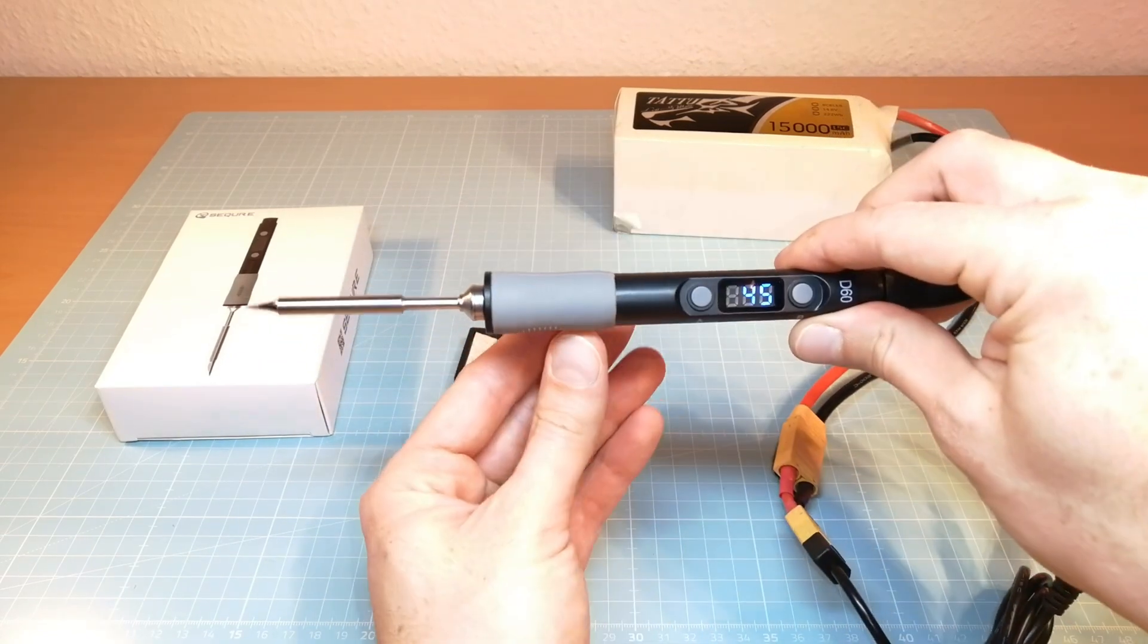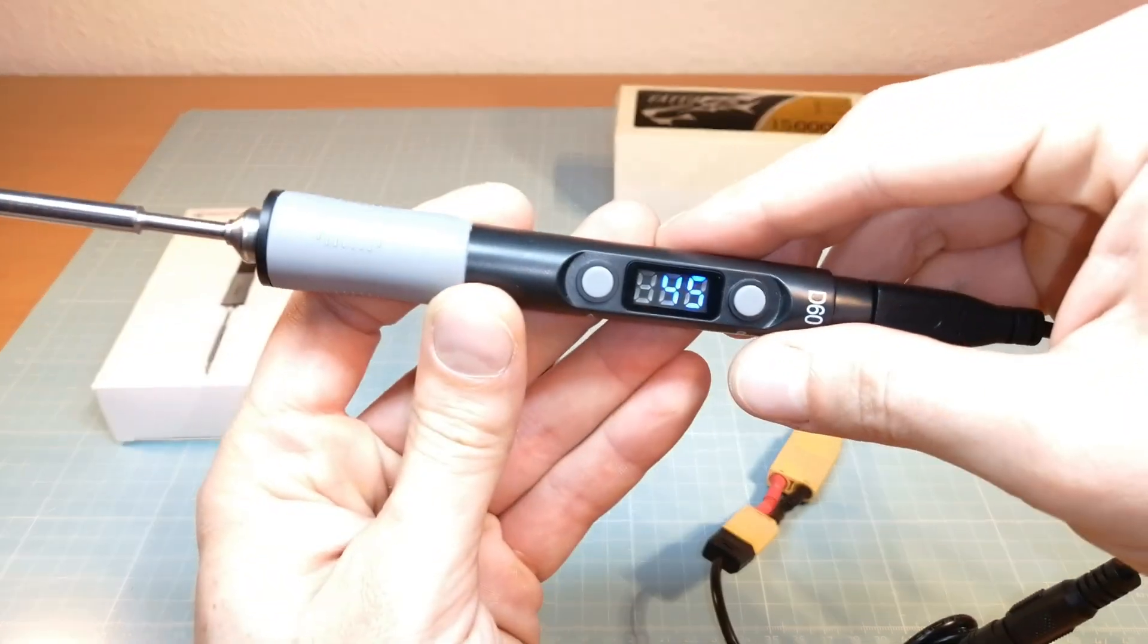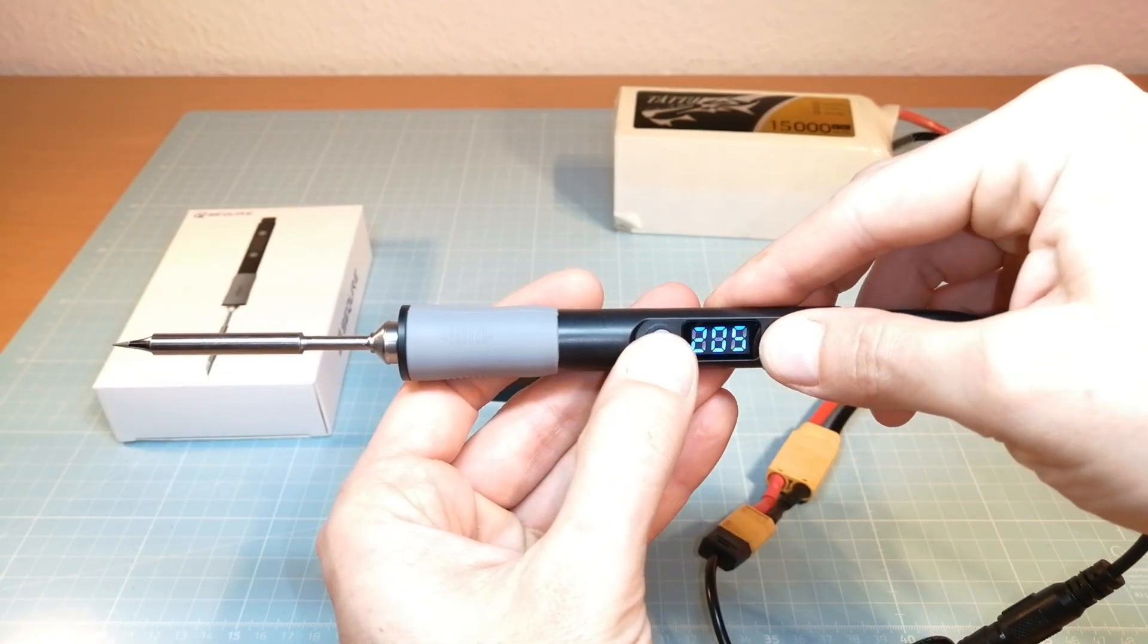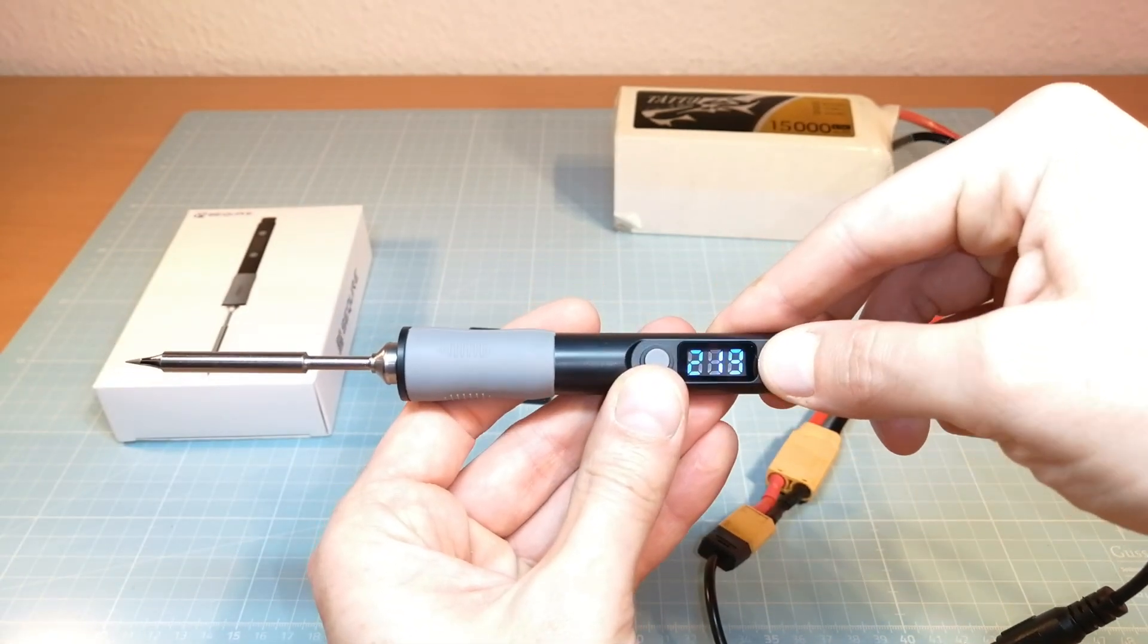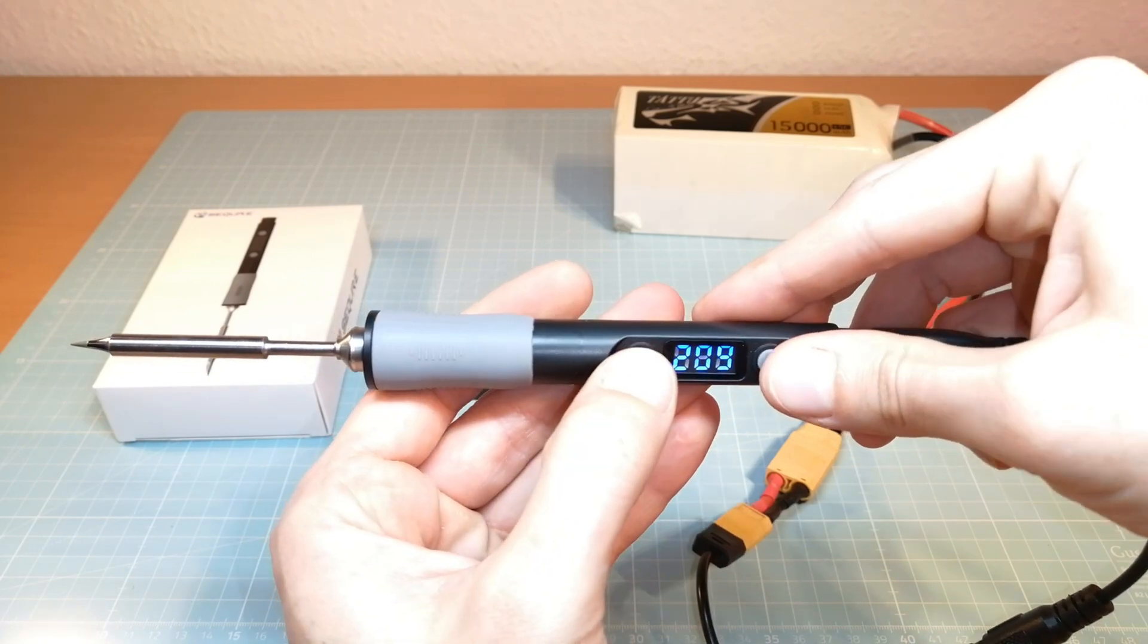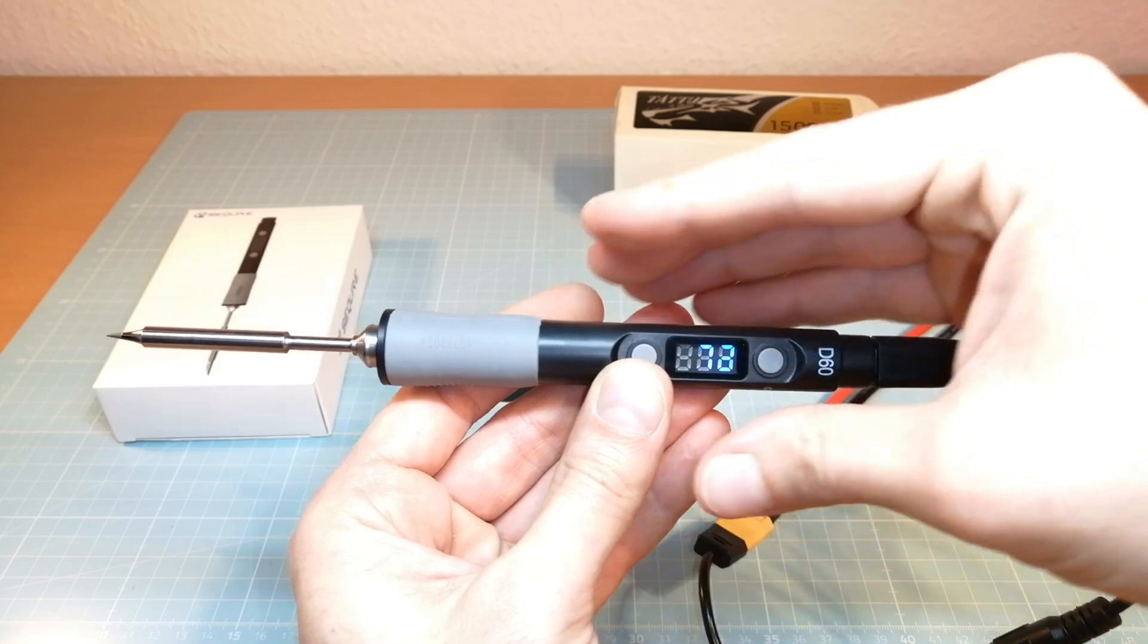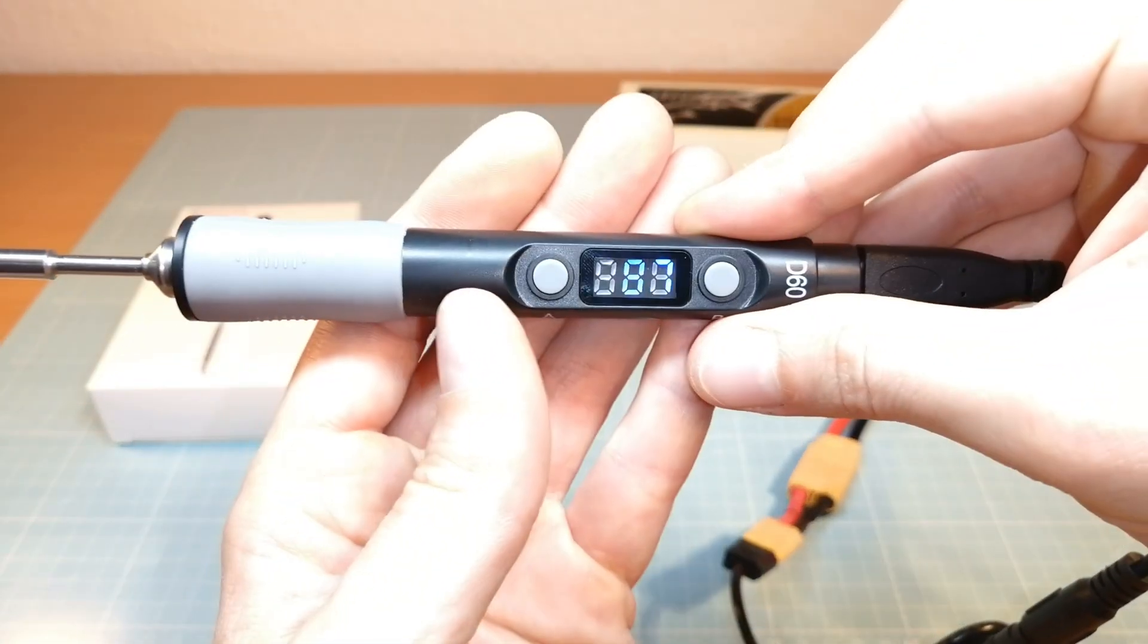Once we have powered up the SQD60B, the LED screen shows us the current working temperature. We can easily change the temperature with the help of the two menu buttons. And now the SD60B is quickly heating up to the selected working temperature.